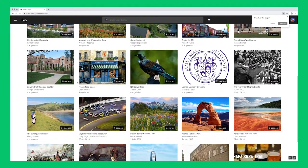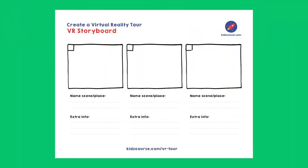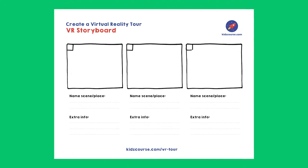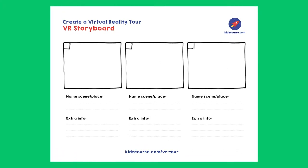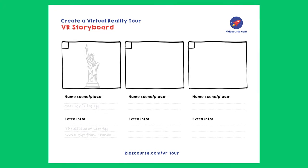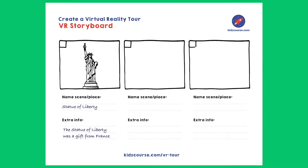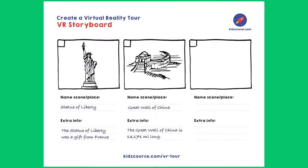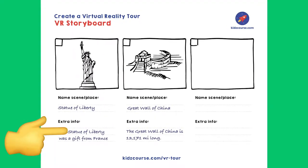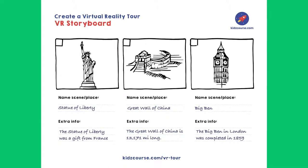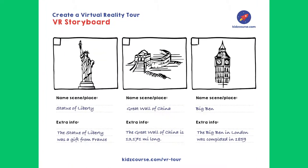Now it's time to start designing your own Scenes. Take the VR Storyboard — you have already indicated on the design canvas which places or Scenes you want to make. Give each scene a name and make a quick sketch of what you would like to show. If you would like to add extra information to your scene, write down what that information is exactly. Continue to do the same for all Scenes of the VR Tour.